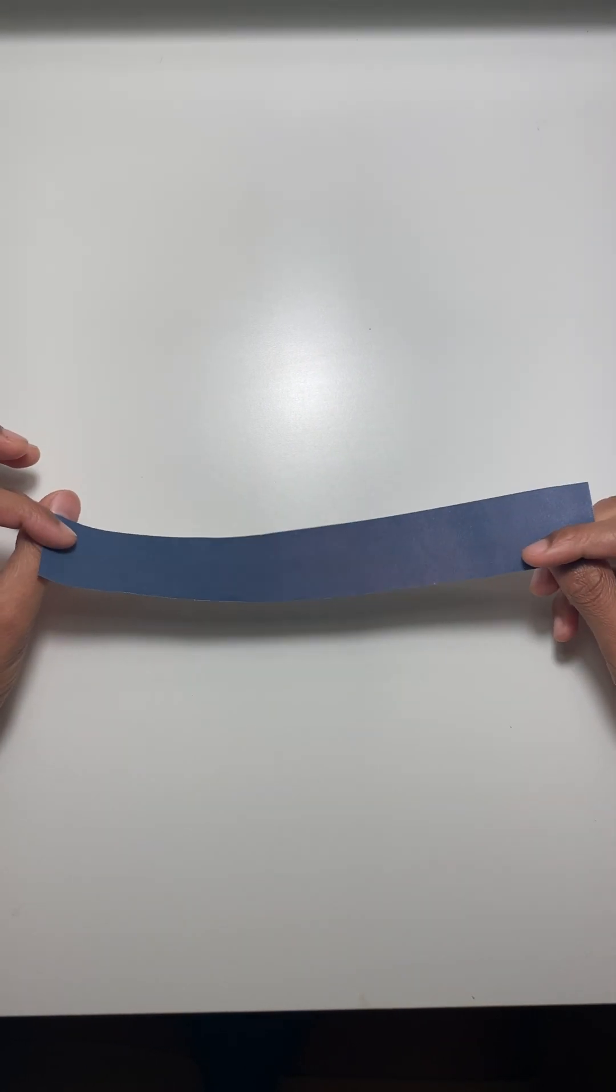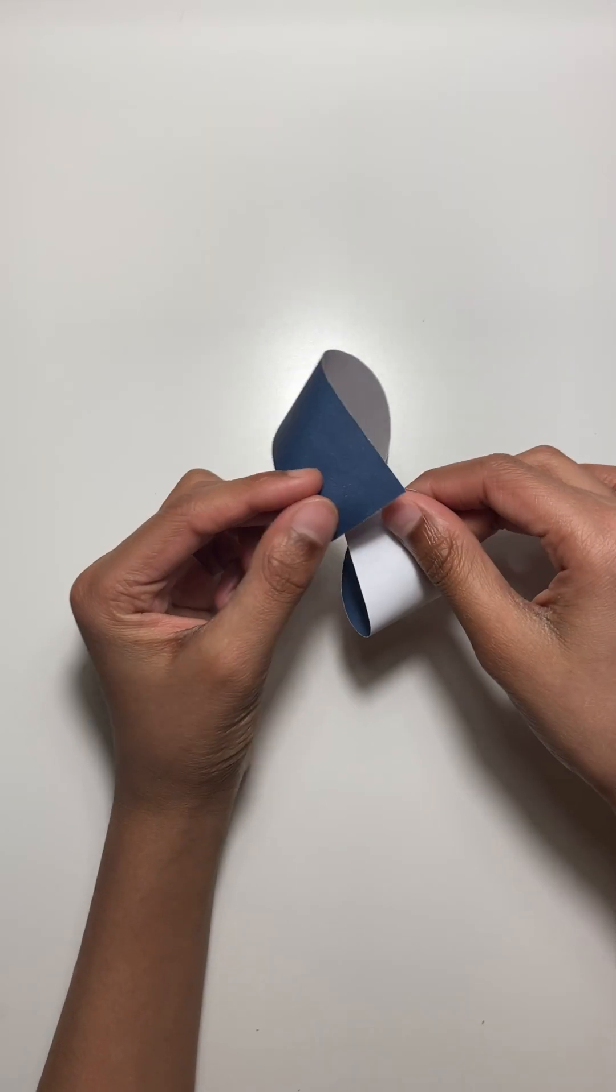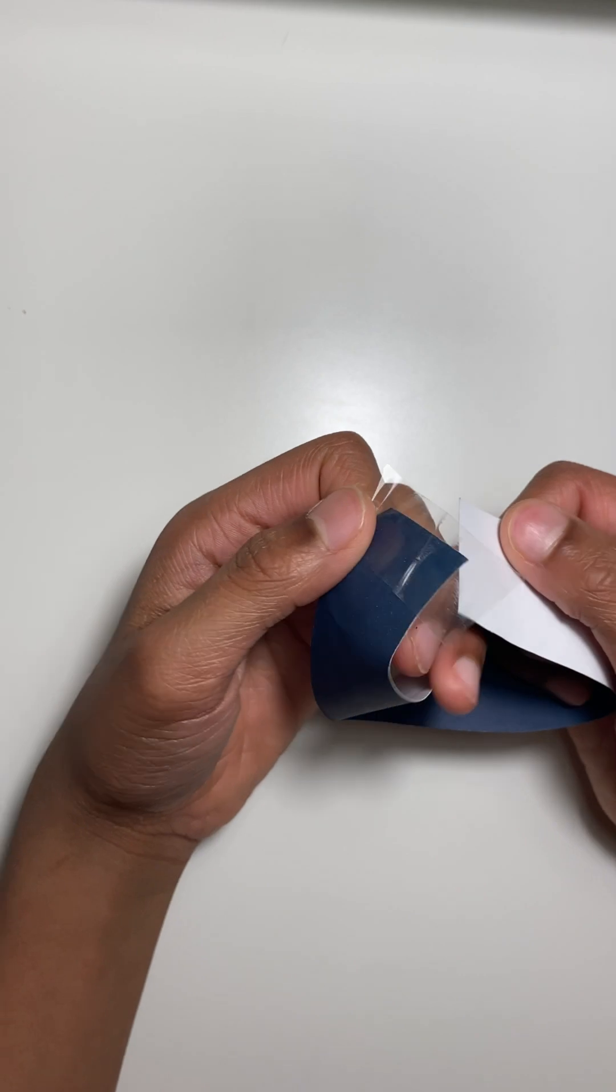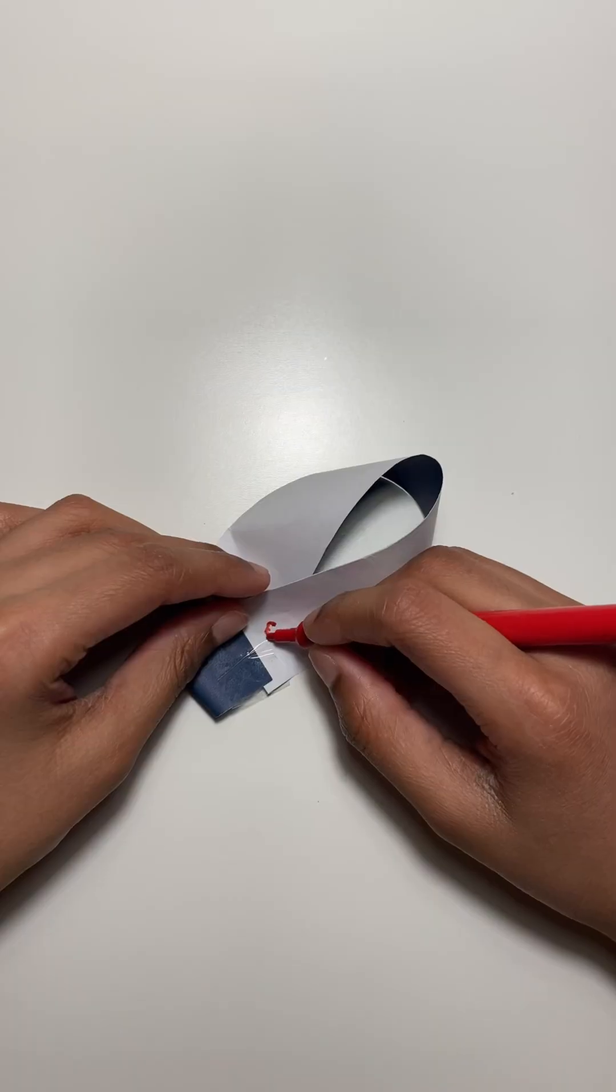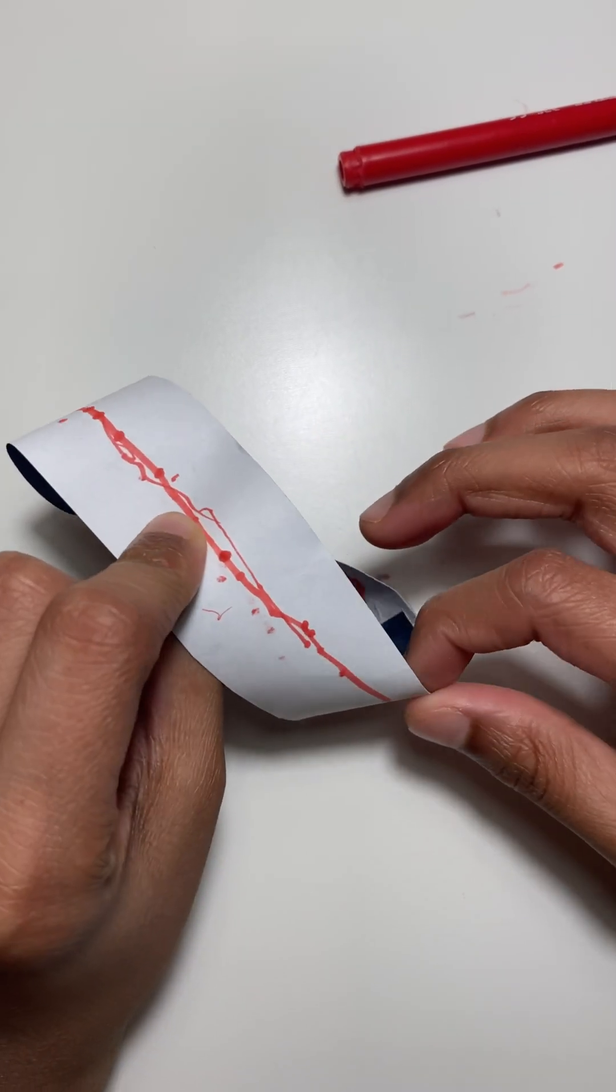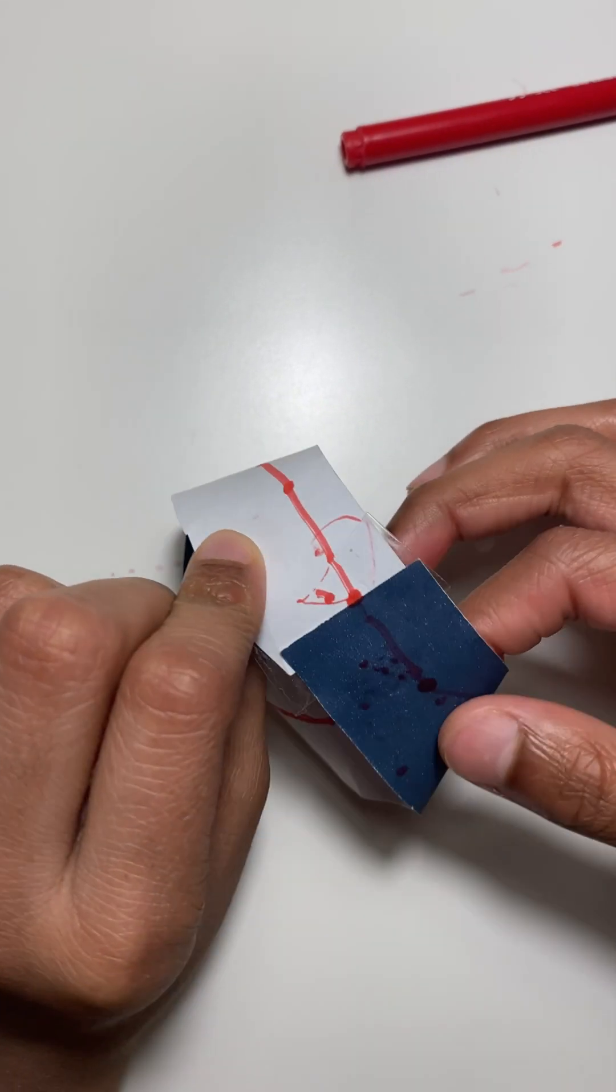Take a strip of paper, give it a half twist, and then connect the ends. You create a surface with only one side and one boundary. If you trace along the surface, you'll find yourself on both sides without lifting your pencil.